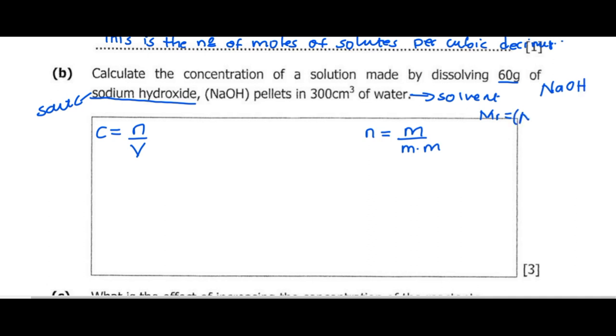We need to find how many atoms of each element are in sodium hydroxide. There is one sodium, one oxygen, and one hydrogen. The mass number for sodium is 23 times 1, plus 16 times 1 for oxygen, plus 1 times 1 for hydrogen.